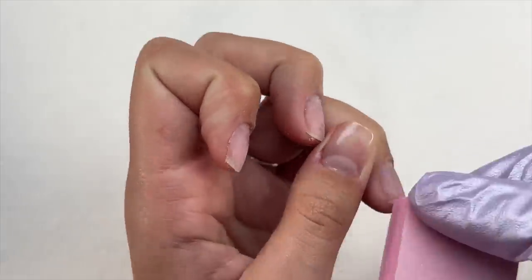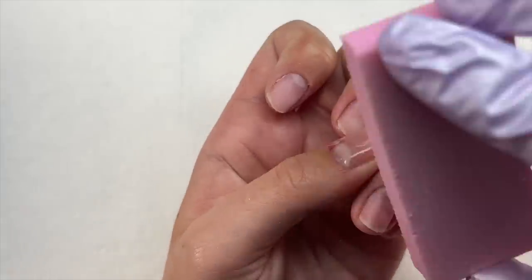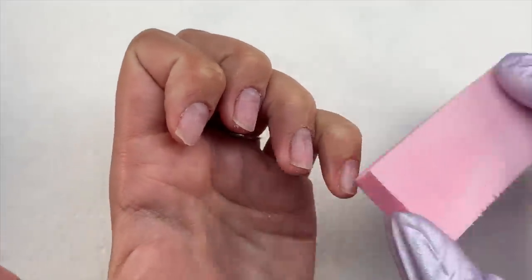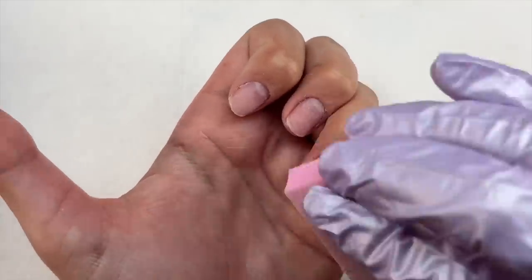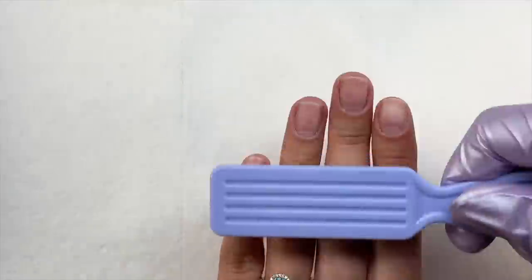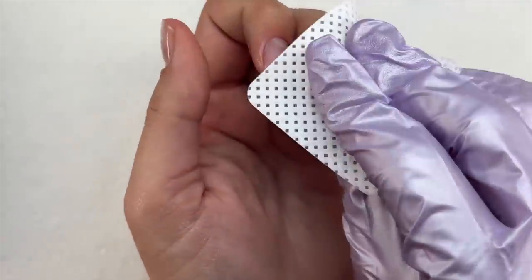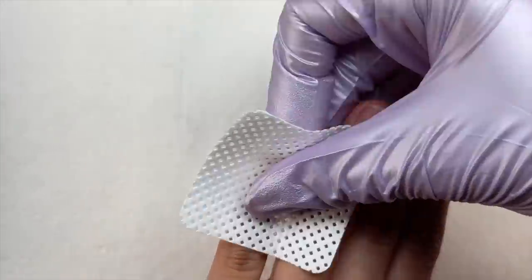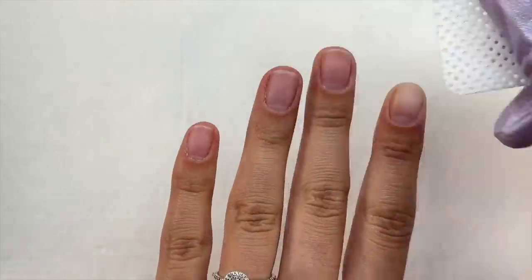So moving into a little bit of nail prep here, I went in, pushed back my cuticle, scraped up any of that dead cuticle skin. I'm now taking a buffer to remove the shine from my natural nail. I removed all of the dust with a stiff dust brush and now I'm just going in with a lint-free wipe with some rubbing alcohol to dehydrate my nails.